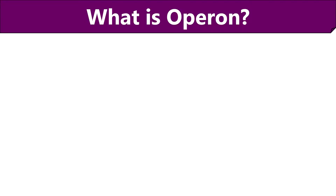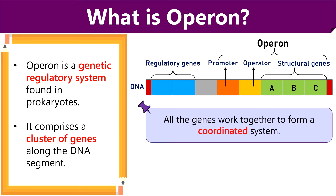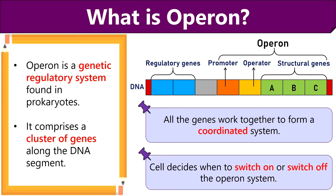Friends, first we will discuss what is operon. If we define it in simple words, operon is basically a gene regulatory system found commonly in prokaryotes like bacteria and archaea. Operon is generally a small segment of DNA that comprises a cluster of genes including closely related structural genes and regulatory DNA sequences in promoter and operator sites, as you can see in this diagram. All the genes in the operon system work together under the control of regulatory genes, and the cell decides when to switch on or switch off the operon system depending upon its requirements. For example, E. coli cell uses lac operon system when it needs to metabolize lactose only in the absence of glucose.